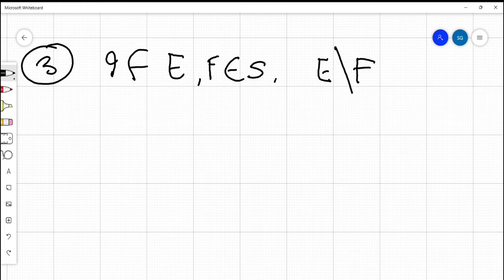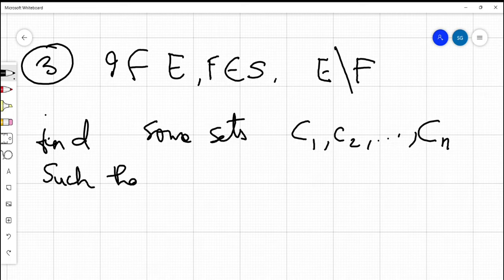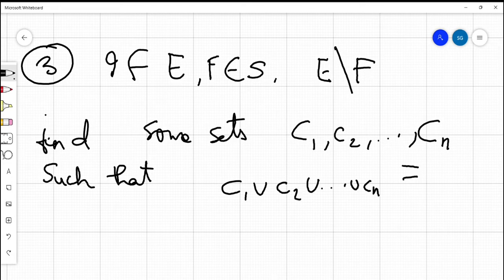if you have two sets E and F which belong to S and consider E minus F, the set difference of E from F, then you should be able to find some sets C1, C2, and so on till Cn such that C1 union C2 union so on till Cn is nothing but E minus F.